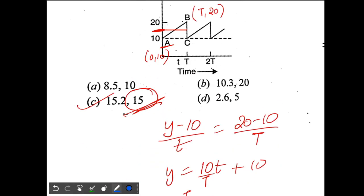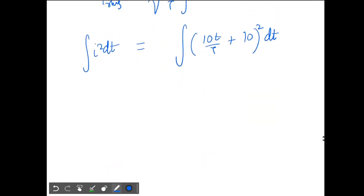Now I will use the integration formula. I will get (10t by capital T plus 10) whole cube by 3 times coefficient of t small t - so that is 10 by capital T. Then I need to put the limits 0 to capital T.